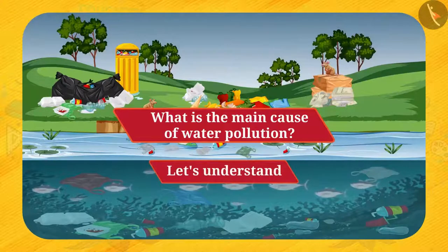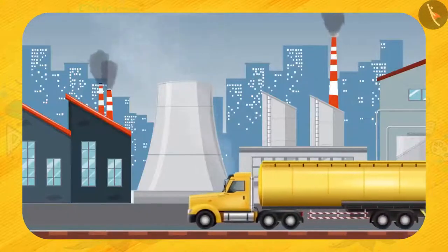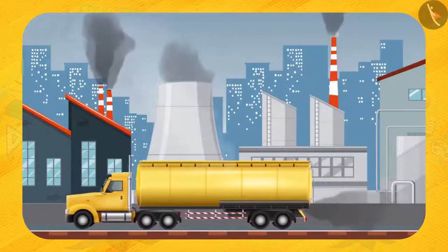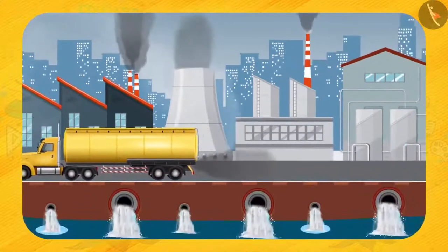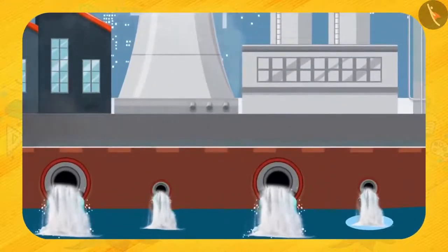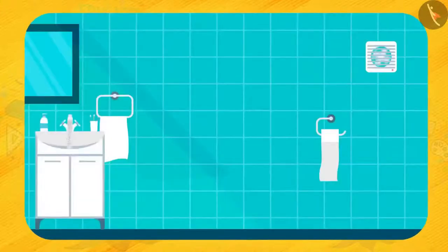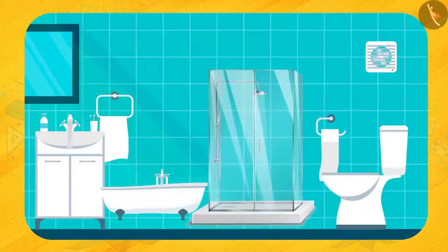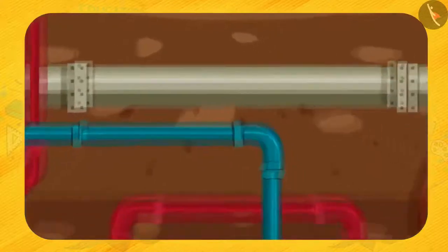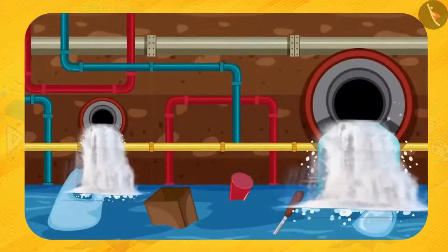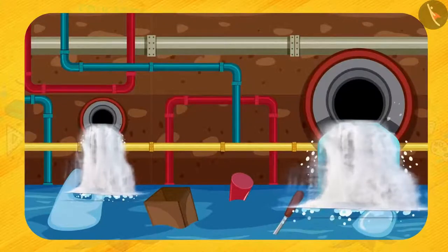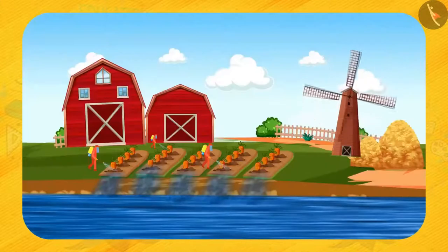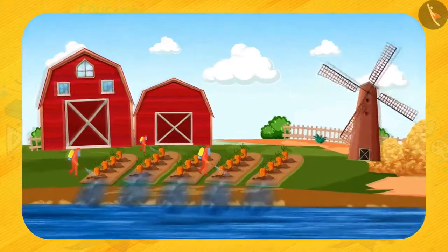Do you know what is the main cause of water pollution? Factories produce lots of harmful chemicals. These harmful chemicals are dumped in a nearby reservoir, which pollutes the water. The wastewater from the sink, bathtub, shower, and toilet is also dumped in a nearby reservoir, which makes the water dirty. Not only this, the use of pesticides and fertilizers by farmers also pollutes the water.